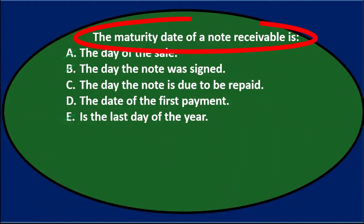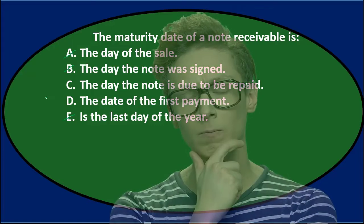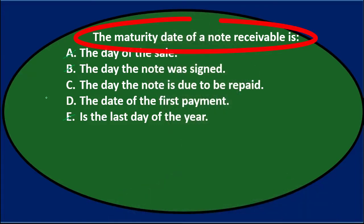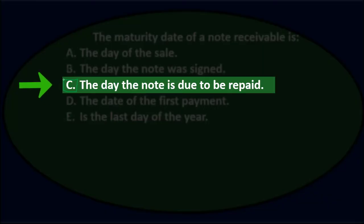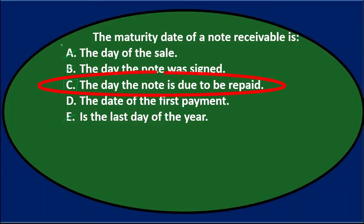The maturity date is either C, the day the note is due to be repaid, or D, the date of the first payment. While a payment might seem like maturity, the note is still going at that point. Maturity here means when the note is done — and that's C, the day the note is due to be repaid. It has matured at the due date, and it's done after that. So the answer is C.